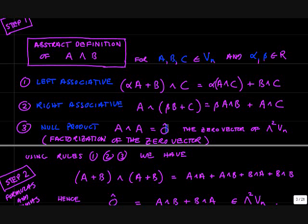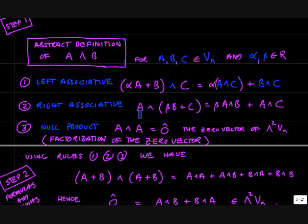Left associative means that if you have a sum of vectors, (alpha·A + B) wedge C, the wedge distributes over this vector sum, and you can rewrite this as alpha times (A wedge C) plus (B wedge C). This is just what you want a normal product to do. Right associative just means that you can do this from the right side — the product distributes over the sum.